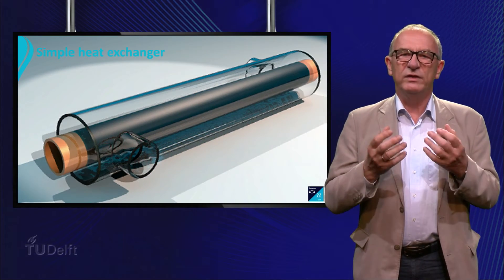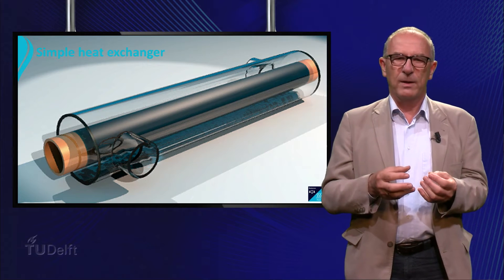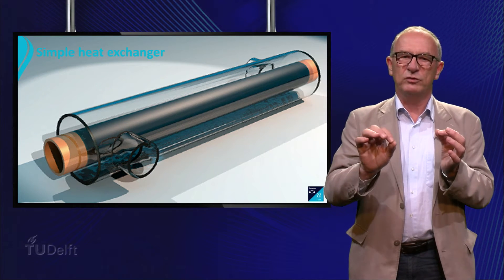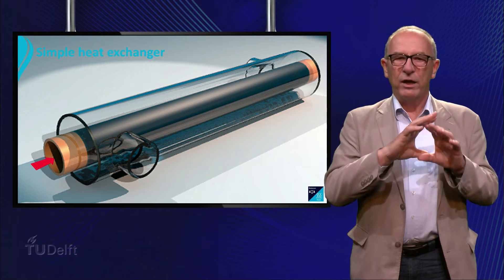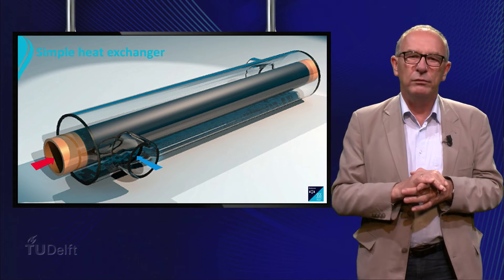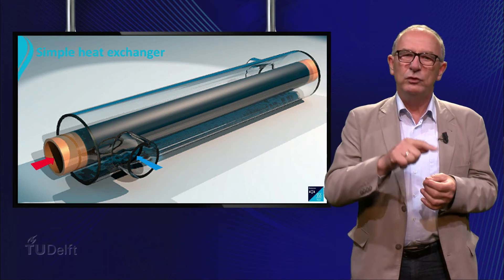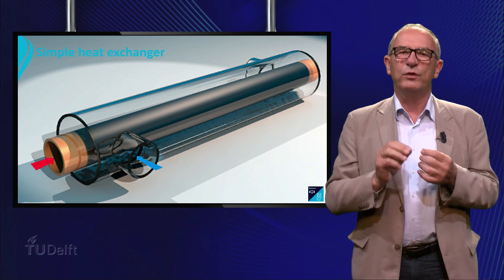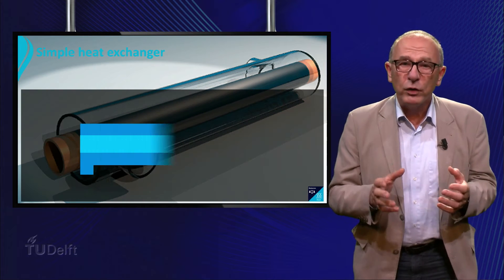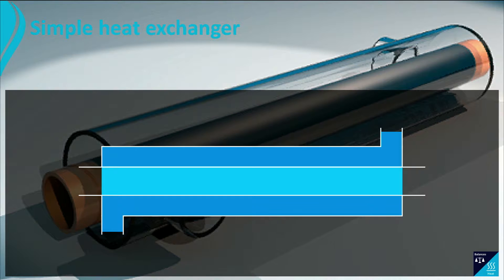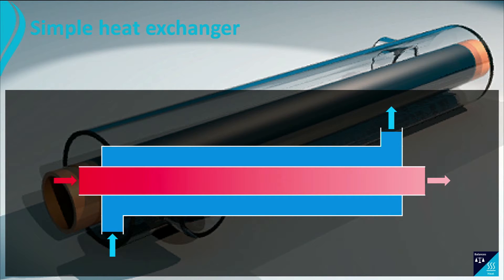Consider the sketch of this basic heat exchanger. It consists of two concentric tubes where a hot and a cold fluid flow through. Heat is exchanged from the hot to the cooling fluid by means of the wall between the two phases. A hot fluid enters the inner tube and is cooled by the cold fluid in the outer tube. The energy phi-Q is transferred from the hot to the cold fluid, and as a result the fluid in the outer tube becomes warmer along the length of the tube.